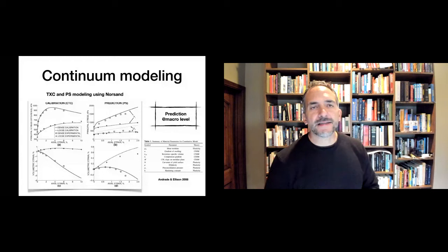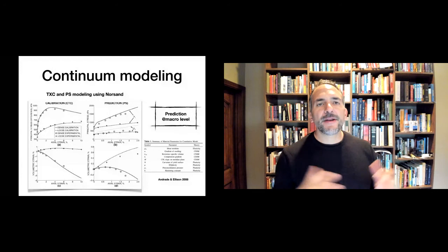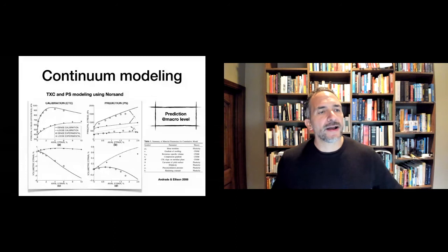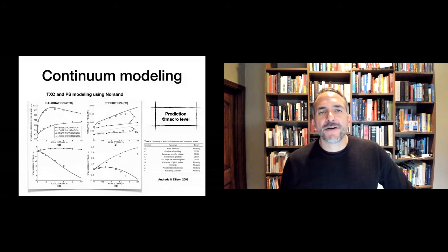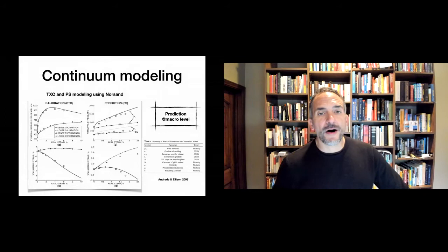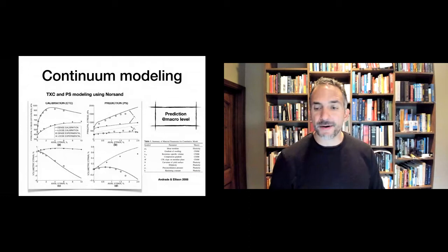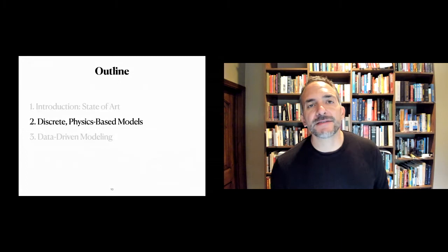We want to escape this issue of phenomenology — some constitutive models have up to 24 parameters, making them extremely unwieldy to calibrate. We want to understand material behavior and be able to introduce non-locality. This is a local model with mesh dependence issues; it cannot capture the thickness of shear bands or the jamming transition seen in the hopper. That motivates the development of more physics-based models that go deeper into the physics.